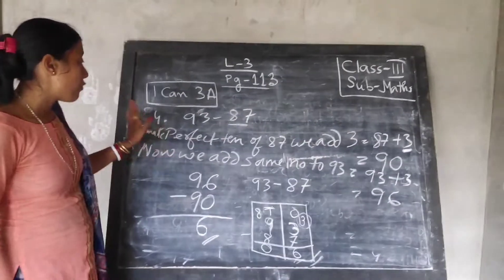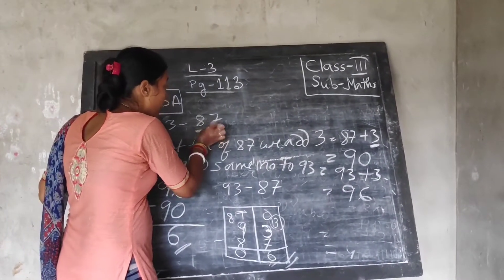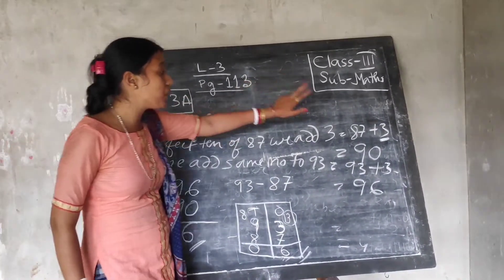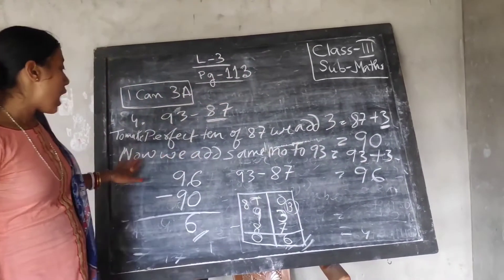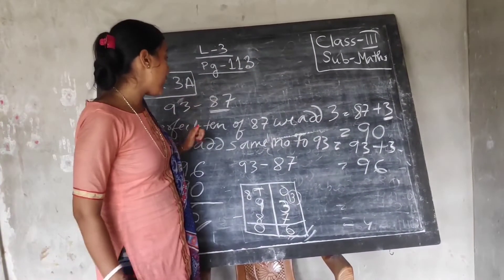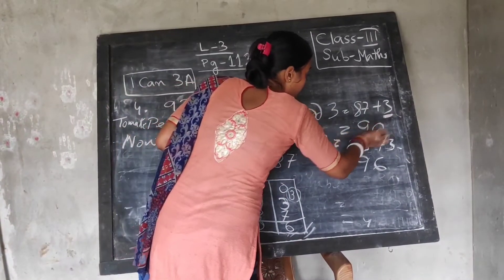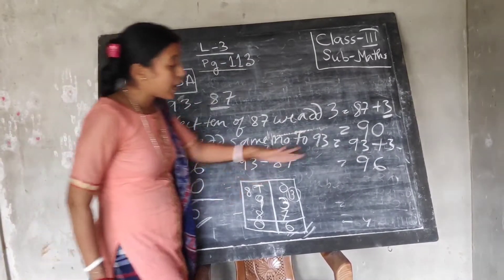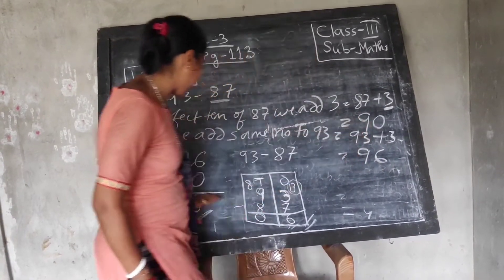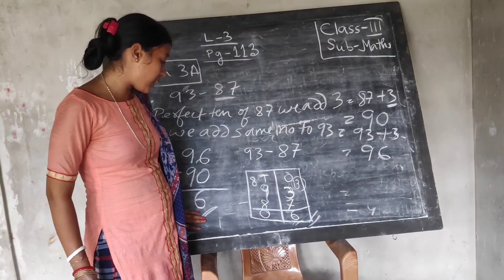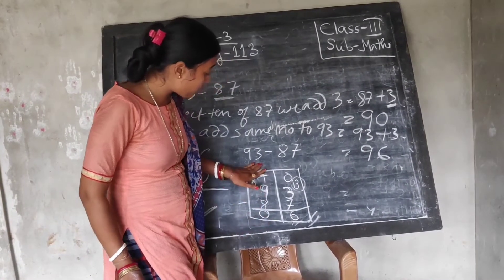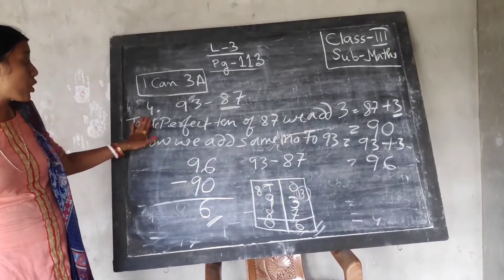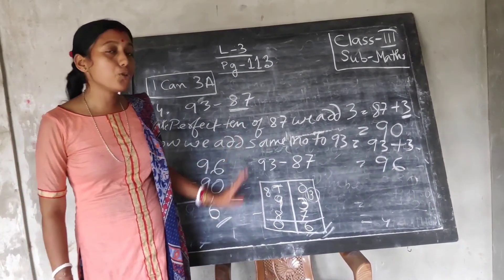So, I will repeat it again — how to do. First, what you have to do: make the second number a perfect 10. You are subtracting 87 from 93. So, this second number, you will make it a perfect 10 first. Then, after making the second number a perfect 10, the number which you have added to make it a perfect 10, you will add the same number to the first number. Then, whatever answer will come, you will subtract these two. You will get the same answer. If you check by doing the question the regular way, you will get the same answer only. Like this, you will do question number 5 and 6 similarly.